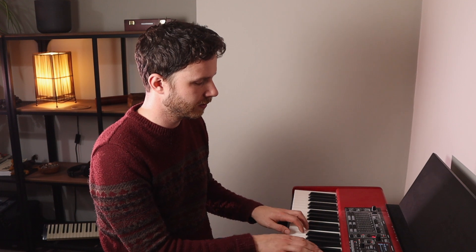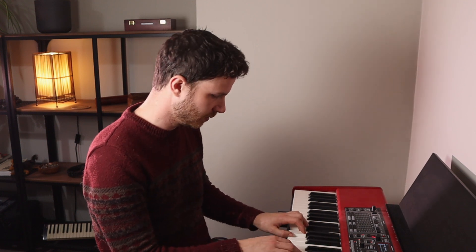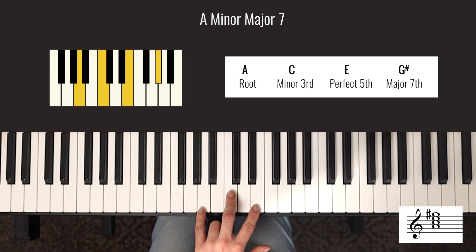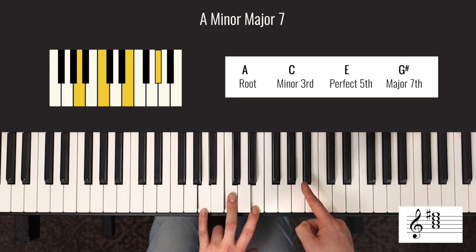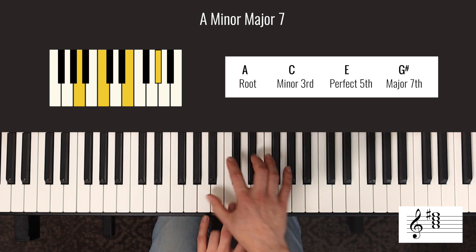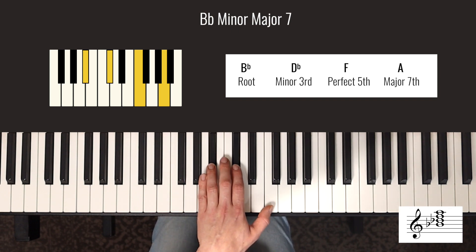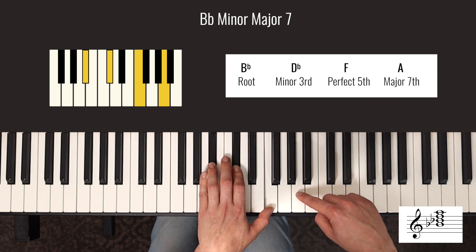Even these more dissonant sounds, when used in context of a piece of music, can sound really nice. For A minor major seven: we had our A minor triad — A, C and E — and we add on the major seventh, a half step below the A, giving us G sharp. For B flat: here's our B flat minor chord, and we add on a half step below B flat, which is the A.